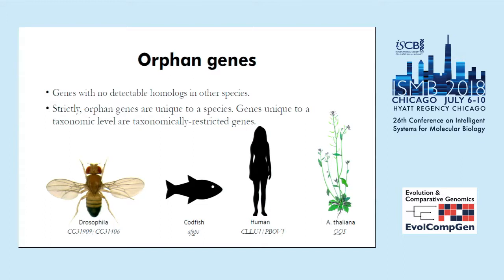Many of these genes have been identified and some have been found to be functional. For example, CLLU1 and PBOV1 genes in humans are associated with cancer. The QQS gene, identified in our lab in Arabidopsis thaliana, can increase the protein content in the plant.